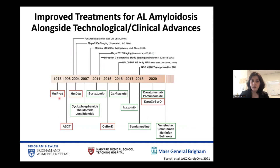We are now introducing novel treatments in AL amyloidosis very rapidly, supported by novel technologies that allow for diagnosis and monitoring of this disease. This chronological presentation of therapy for AL amyloidosis becomes much more crowded as we pass the year 2000, with many more treatment approaches now applicable in this field.